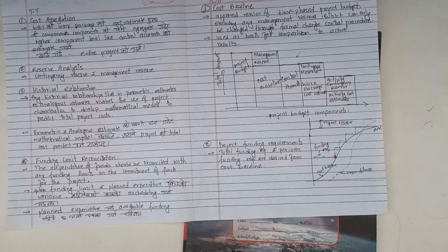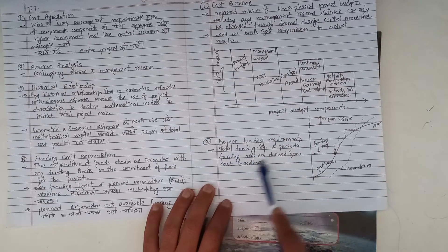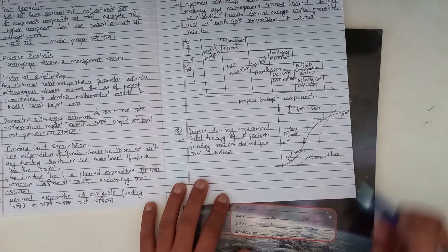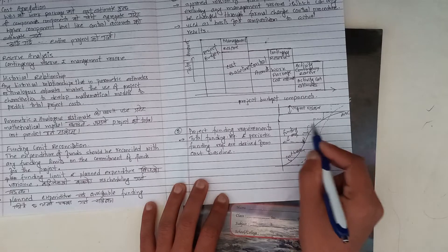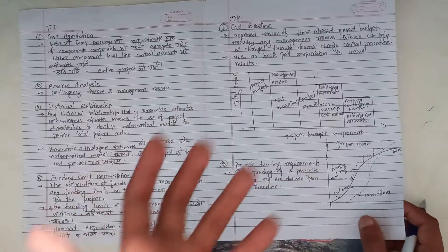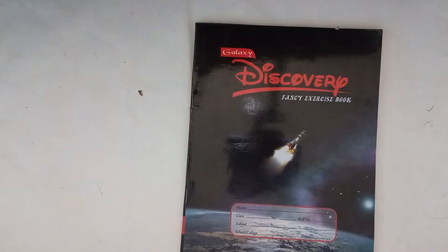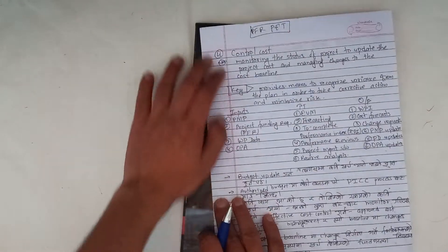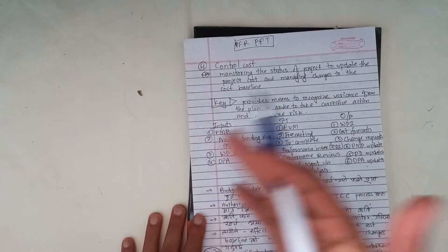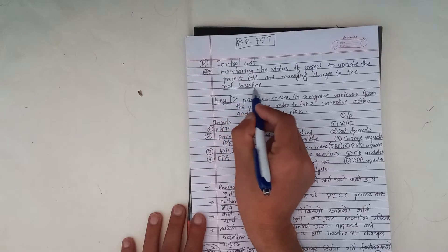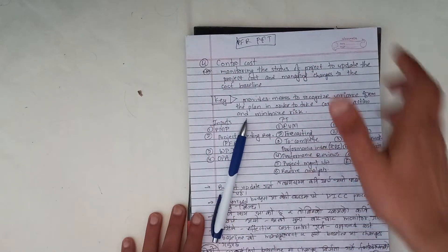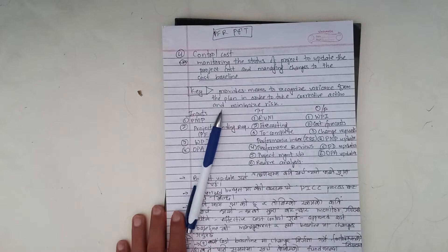Cost baseline plus management reserve equals the overall project budget. Total funding requirements or periodic funding requirements are derived from the cost baseline. Suppose we have a cost baseline — the expenditure diagram shows a ladder type. If you have any funding limits on the commitment of funds for the project, then there is a planned expenditure variance and you may need to reschedule work.